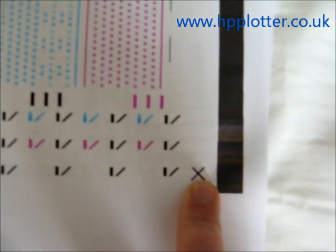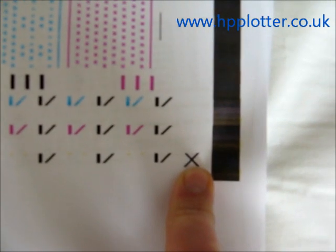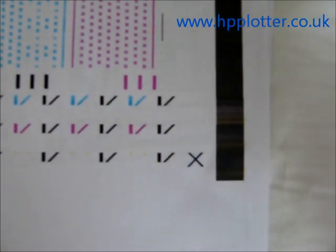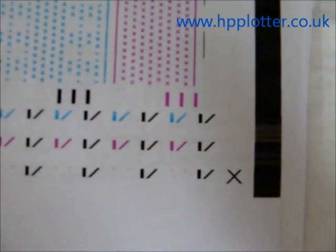So what you can probably hear in the background is the machine is now going through and printing another print head alignment. It will repeat that process three times in an attempt to pass an alignment, at which point it will stop.